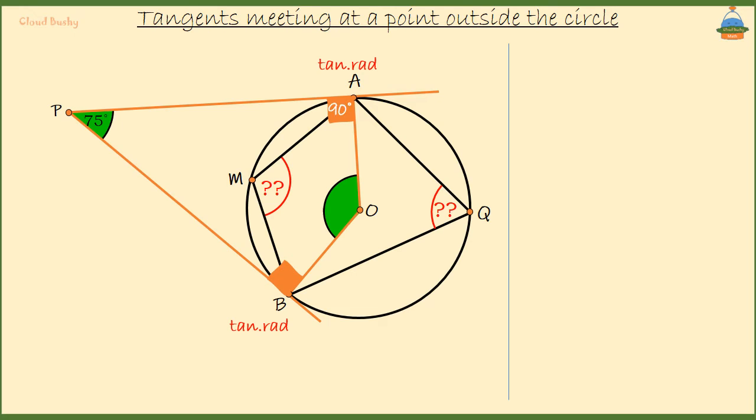So we have 90 degrees plus 90 degrees. Now, since 90 plus 90 is 180 degrees, we are only short of 180 degrees if we are to have a total of 360 degrees in this quadrilateral. Now, APB plus AOB should be 180 degrees.